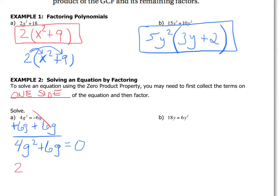Then looking at the variables, they both have g at minimum, there's one in each so g can come out. When the 2g comes out, the first term is still 2g because 2g times 2g is 4g², and on the second one the g's cancel, leaving me with 3.